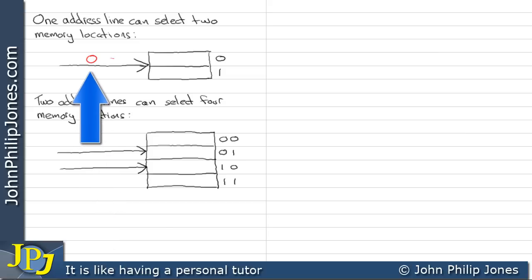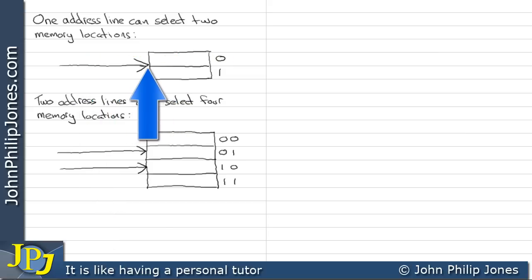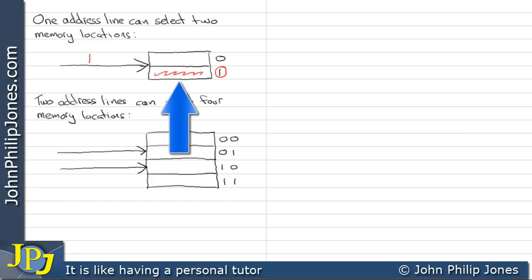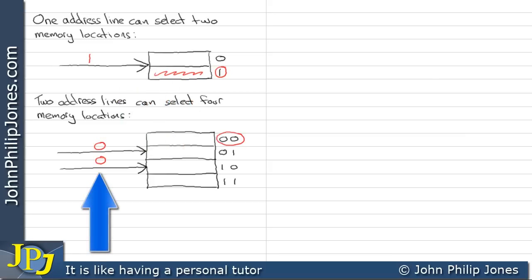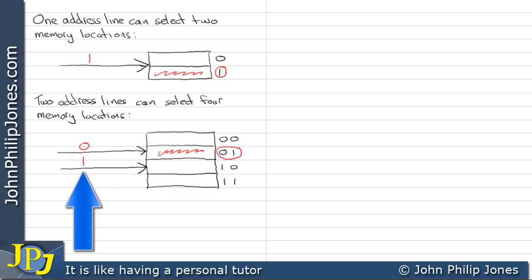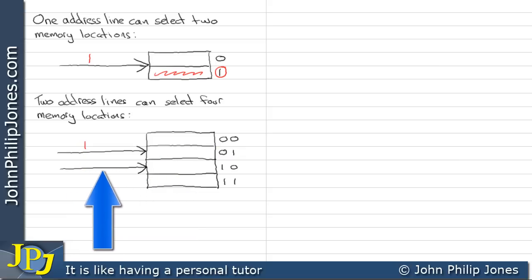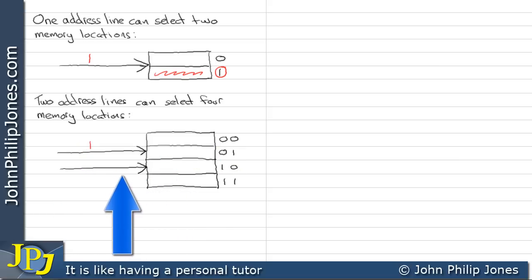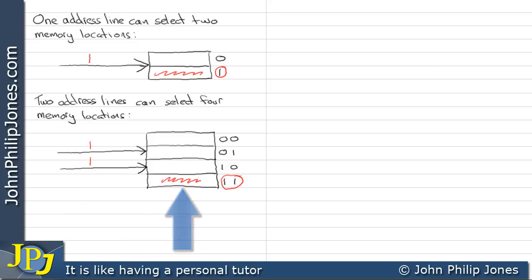For example, if I put a 0 on here, that selects this address. If I change this to a 1, it selects this address here. If I make both lines 0, it selects that address. If I make them 0 and 1, this selects this address. If I make the address lines 1 and 0, it selects this address. And if I make them both 1, it selects that address there.